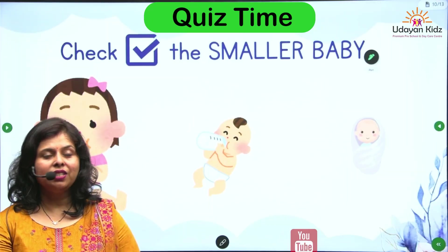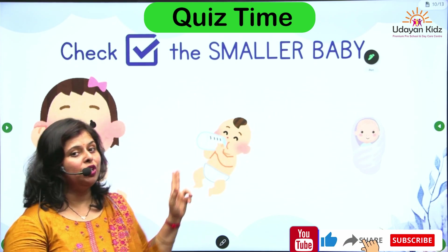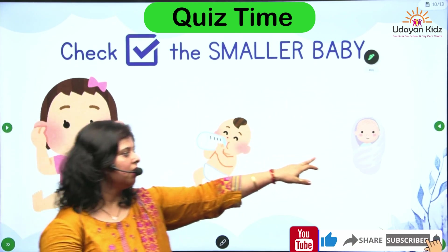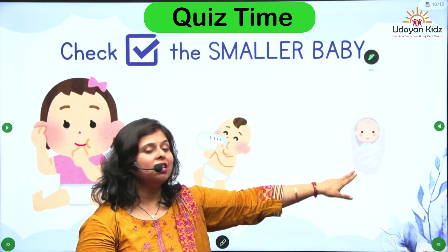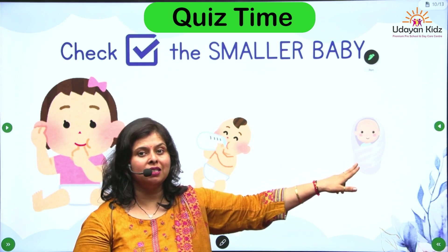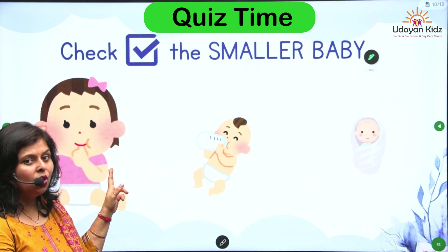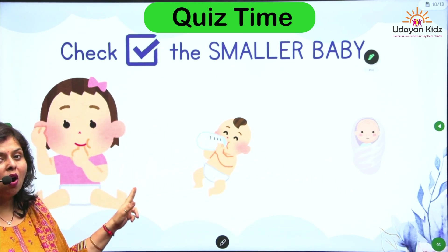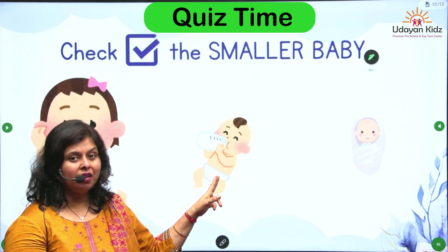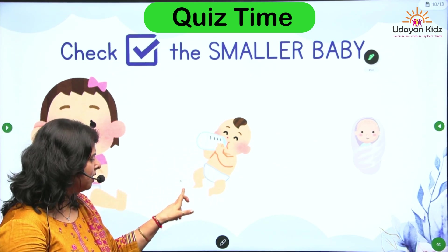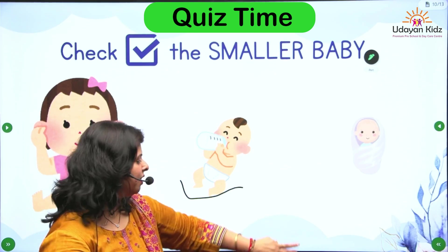Okay children, check the smaller baby. Which one is smaller? This one? No, this is smallest. This one? No, this is small. And this one? Yes, this is smaller. Very good children.